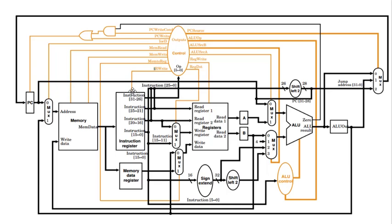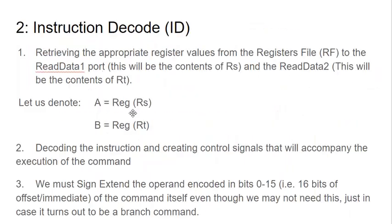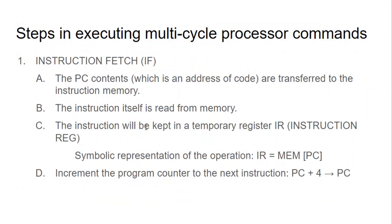The instruction write enable line must be one so the instruction gets written to the IR. The memory read line is one and the write line is zero so we are reading. Since the behavior of the chip in the first cycle is always the same regardless of the operation, the controller is simply hardwired to do these actions — it hasn't read the opcode yet and doesn't need to. This stage is called the fetch stage because we have fetched the instruction from memory and incremented the PC.